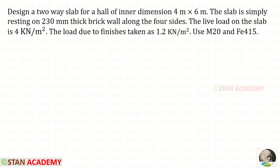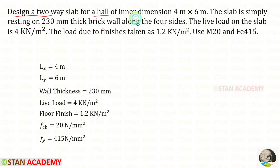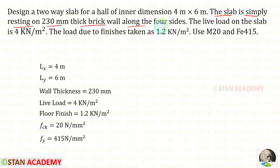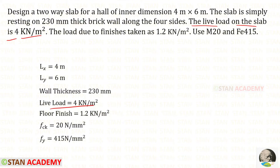Hello everyone. Today we are going to design a two-way slab. Let us read the question and write the given data. Design a two-way slab for a hall of inner dimension 4 meter by 6 meter. The short side is taken as LX and the long side as LY. The slab is simply resting on 230 millimeter thick brick walls along four sides. The live load is 4 kilo newton per meter square and the load due to finishes is 1.2 kilo newton per meter square. Use M20 and FE415 — FCK is 20, FY is 415.